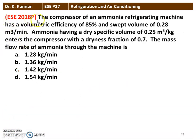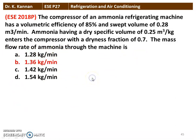The next question from the 2018 question paper: The compressor of an ammonia refrigeration machine has a volumetric efficiency of 85 percent and the swept volume is 0.28 meter cube per minute. Ammonia having dry specific volume of 0.25 meter cube per kilogram enters the compressor with a dryness fraction of 0.7. The mass flow rate of ammonia through the machine is — we are given 4 options. The correct answer is 1.36 kilograms per minute. We will see how in the next slide.